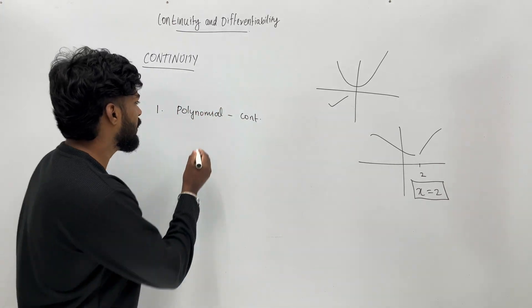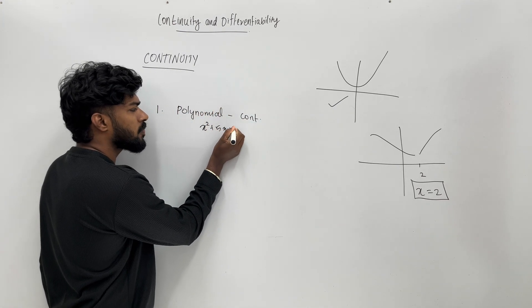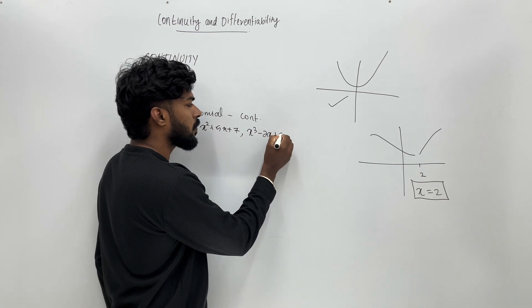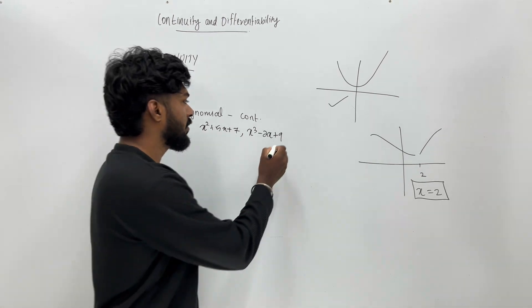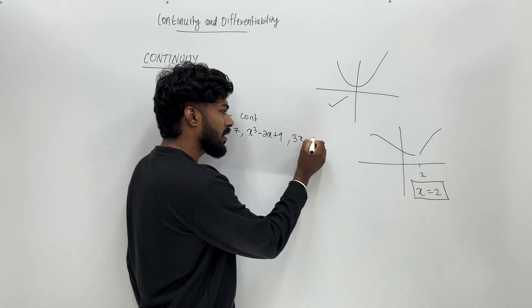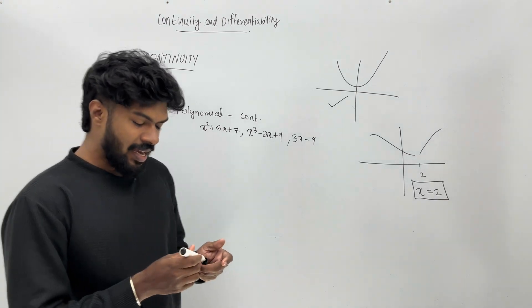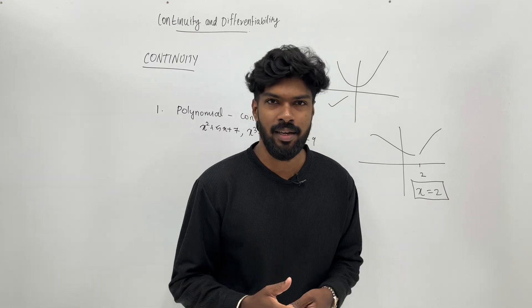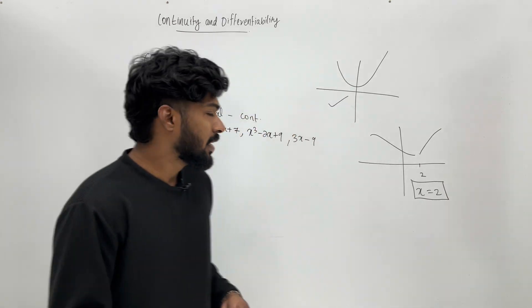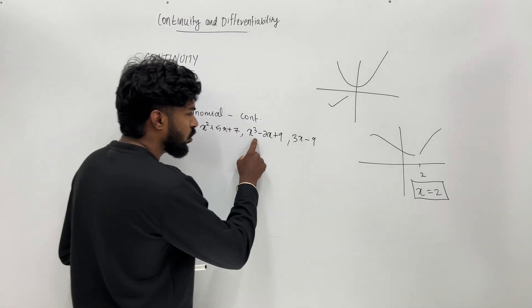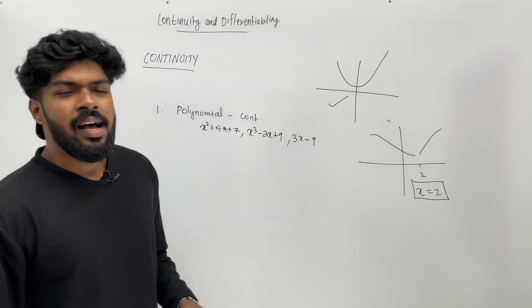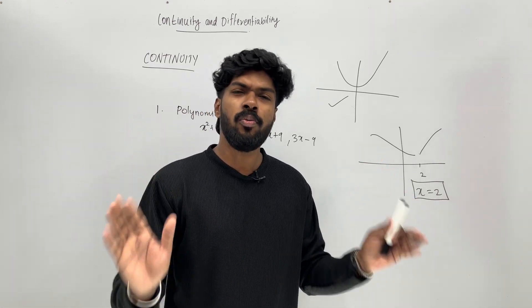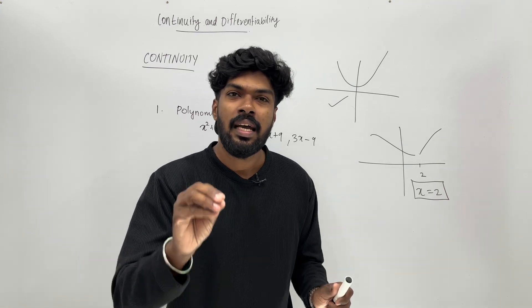This is a polynomial. For example: x squared plus 5x plus 7 — this is a polynomial. x cubed minus 2x plus 9 — this is a polynomial. 3x minus 9 — this is a polynomial. All polynomial functions are continuous.